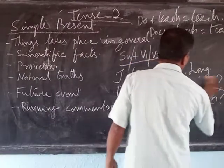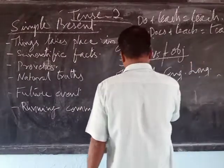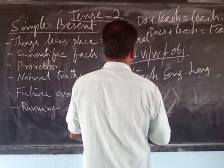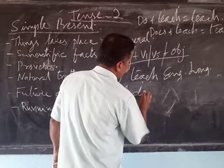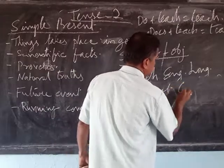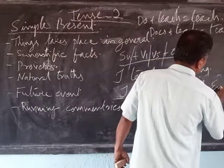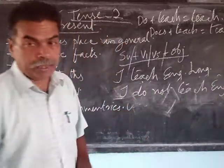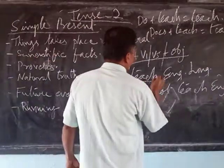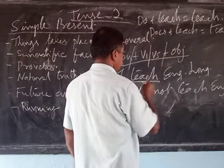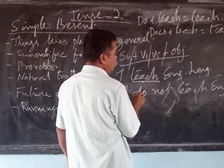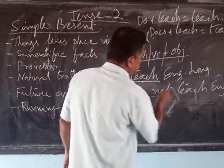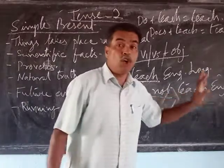Now let's look at negative formation. For example: 'I do not teach English language.' Here also the same principle applies — split the verb 'teach' into 'do + teach,' then insert 'not' between 'do' and the given form of the verb 'teach.'